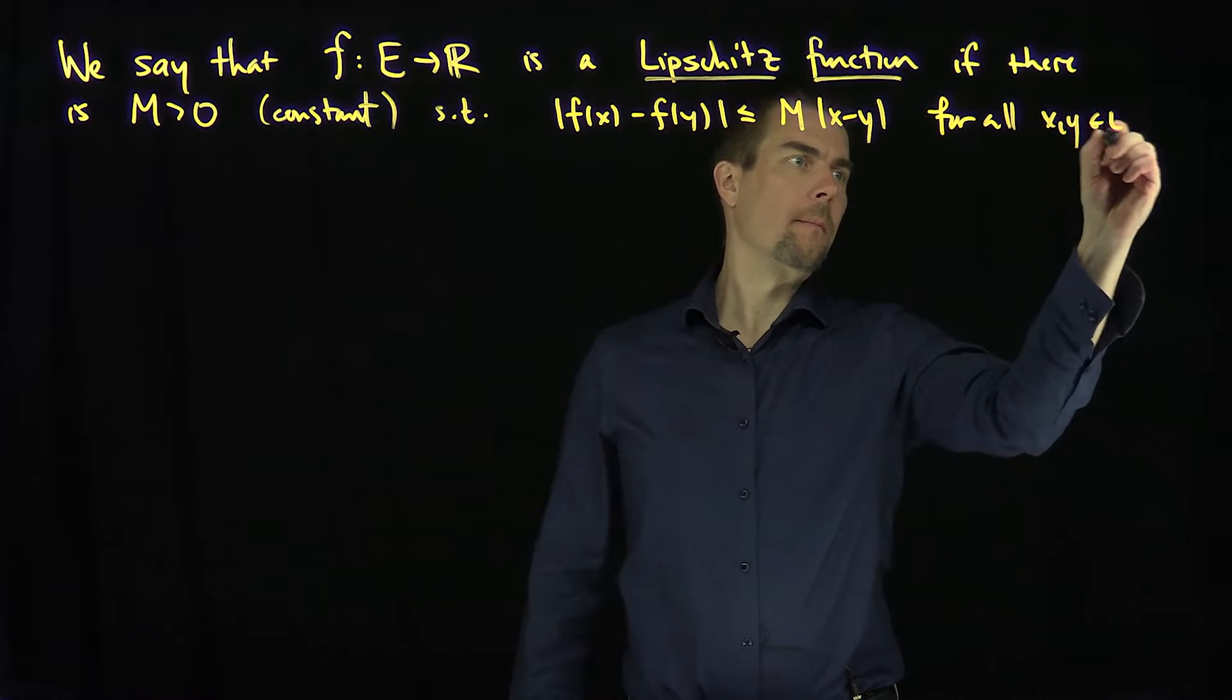We say that f mapping E into R is a Lipschitz function if there is an M constant such that |f(x) - f(y)| is less than or equal to this constant M times |x - y| for all x and y in E.